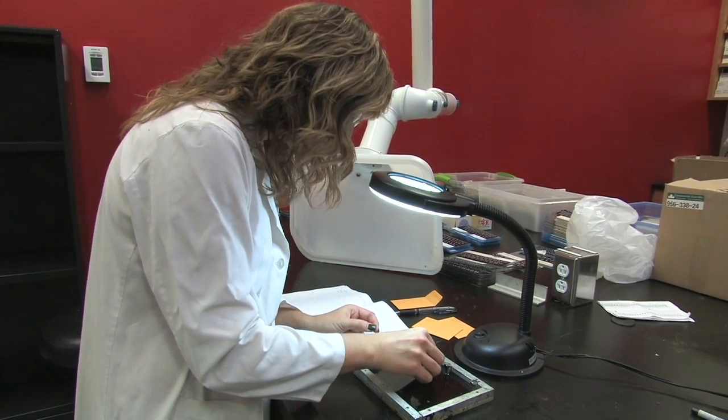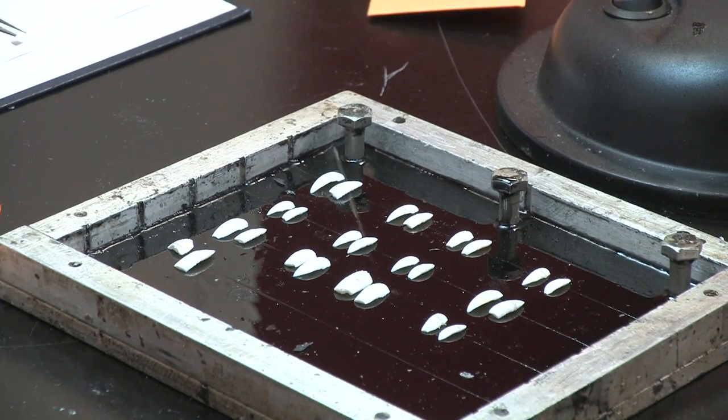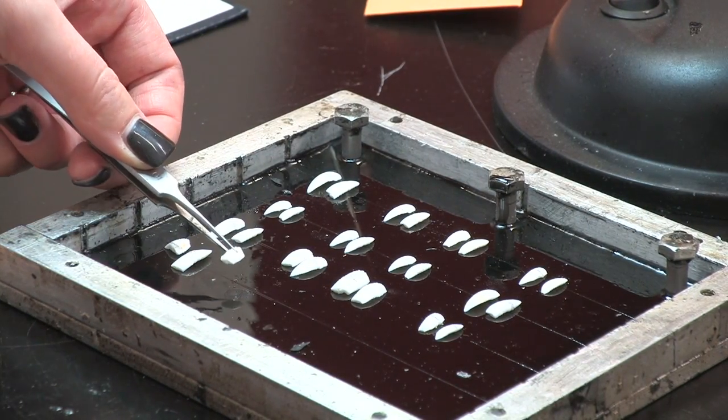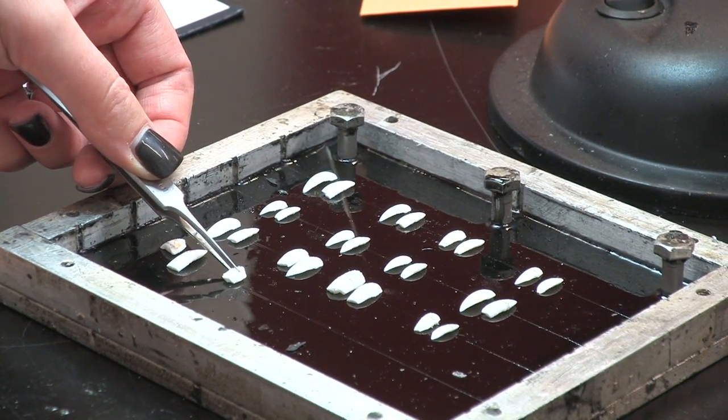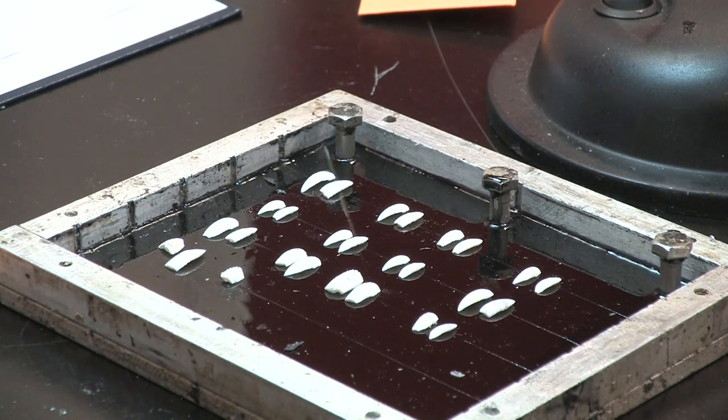You can still use broken otoliths. Typically a break will happen right around the middle but as long as you can still mark the core the otolith can be embedded as would other otoliths by aligning the core with the etched line on the plate.